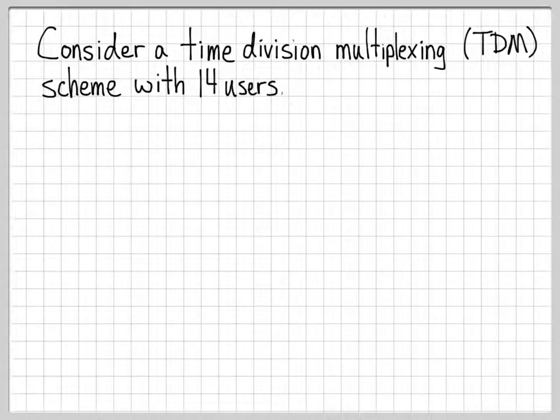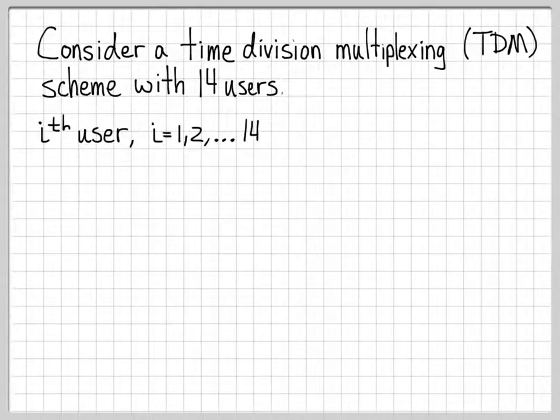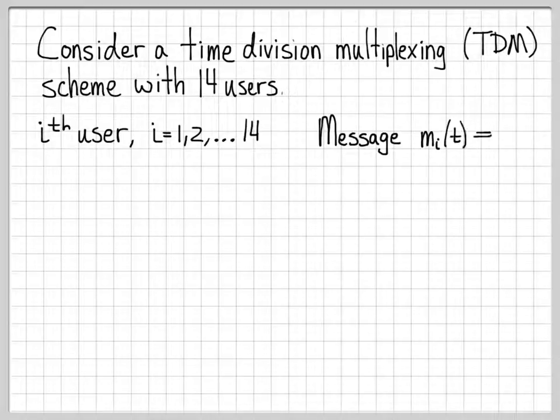In this problem, we're going to investigate time division multiplexing. Just to make things concrete, we're going to arbitrarily pick 14 users and then do a variety of computations for this toy TDM example. We're going to let the i-th user, so i equals 1 to 14, have a message of the form m_i(t).